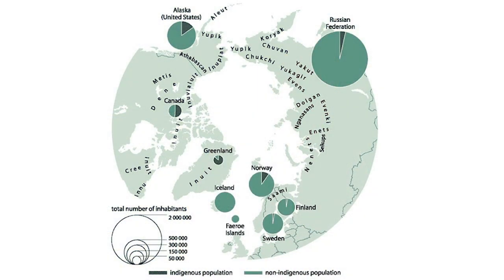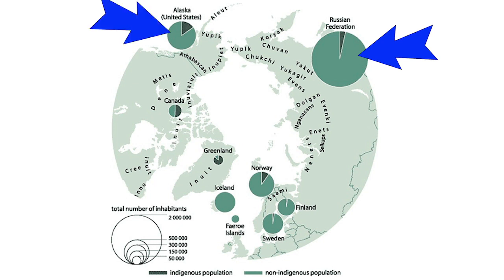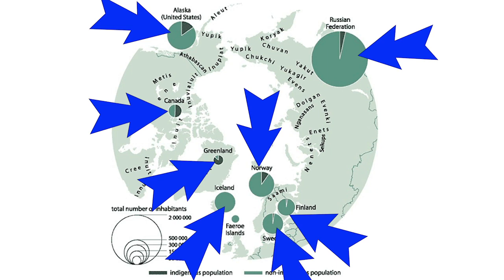The Arctic has a number of nations that border within it or have land within it — these are called Arctic nations, and there are eight of them. These are nations with sovereignty over lands that lie within the Arctic Circle, using that astronomical definition of 66.5 degrees north. Those nations are Russia, which has a tremendously long Arctic coastline; the United States, because of its coast along Alaska; Canada; Iceland; Denmark, because Denmark has sovereignty over the island of Greenland; and Norway, Finland, and Sweden — the Nordic countries.